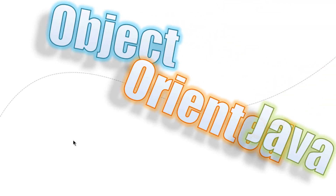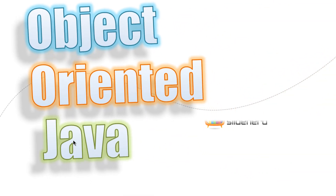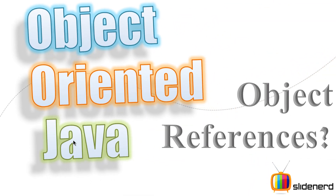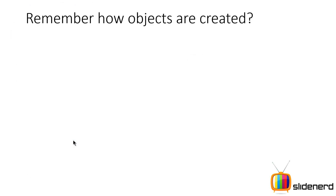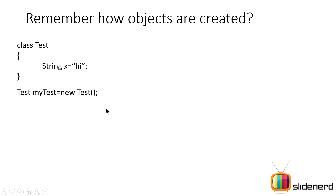Hey subscribers and watchers, what's up from Slidenerd — this is Vivs. In this video let's talk about what object references are in Java. First, let's talk about how objects are created. If you remember, there is a class Test that has an instance variable String x containing the value 'hi'. To make an object of this class Test, you simply say: test myTest = new test().